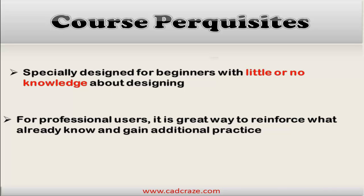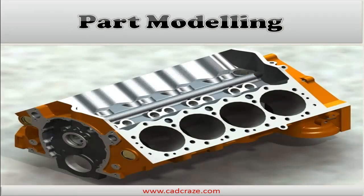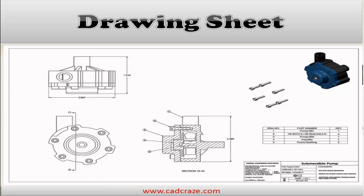After completing all the lessons in this series, you will be well-versed in CATIA V5 2015 fundamentals, which mainly includes 3D modeling, assembly and drawing sheets. This foundation will not only get you started on an exciting path of creating various parts and assemblies, but it will spark your interest to learn more about CATIA V5 functionalities and capabilities.